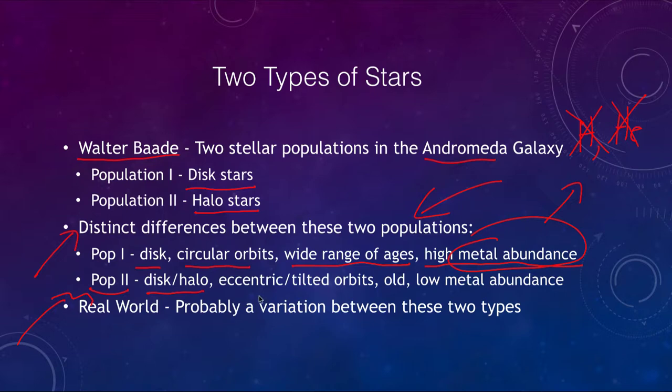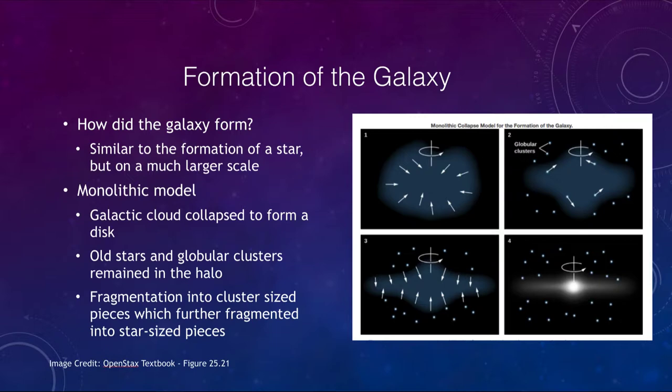Population two stars are found in the disk and the halo, they have eccentric or tilted orbits, they tend to be all very old — so not a wide range of ages — and they have a very low metal abundance, being almost entirely hydrogen and helium. Of course this is an idealized situation; in the real world there is really a continuum of variation between these two types, but they are convenient categories for study.